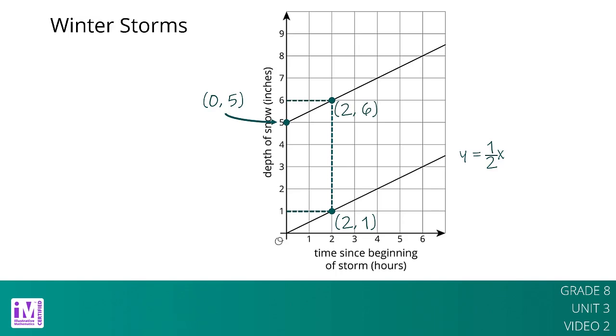Unlike the first storm, the second is not a proportional relationship, since the line representing the second storm has a vertical intercept of 5. The equation representing this storm is y equals 1 half x plus 5.